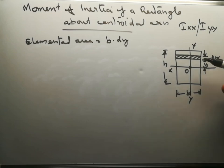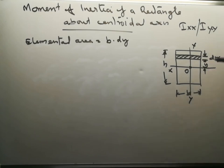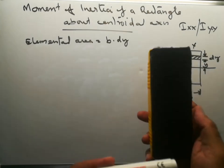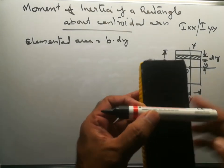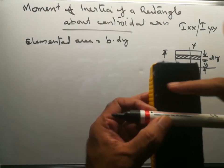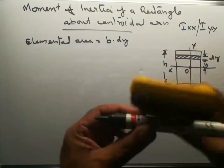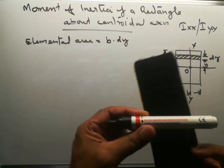We will consider the rotation of this element about the horizontal axis. If this is the rectangle area and this is the centroidal axis, we consider a small strip here, and we consider the rotation about this axis — that is Ixx.